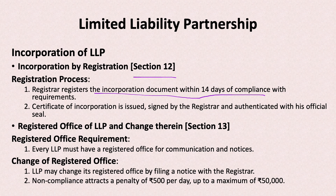Then the certificate of incorporation will be issued by the Registrar with the official seal. Just as a company has a certificate of incorporation, an LLP also has a certificate of incorporation. This means it is now a legally valid Limited Liability Partnership established, and business can start as an LLP.